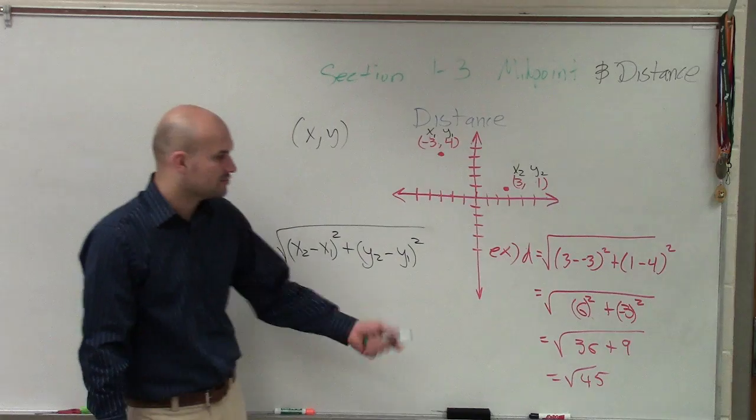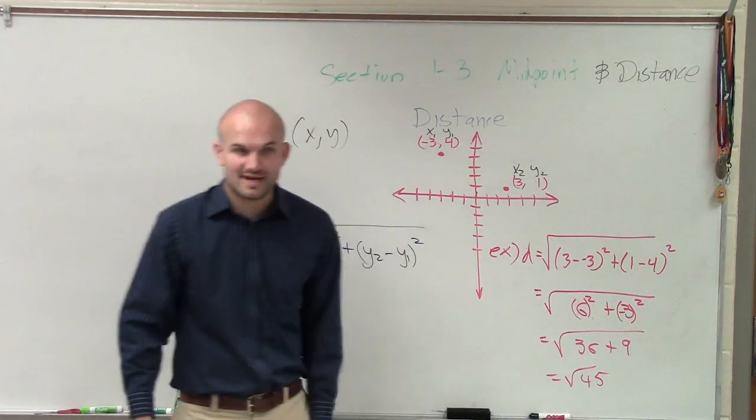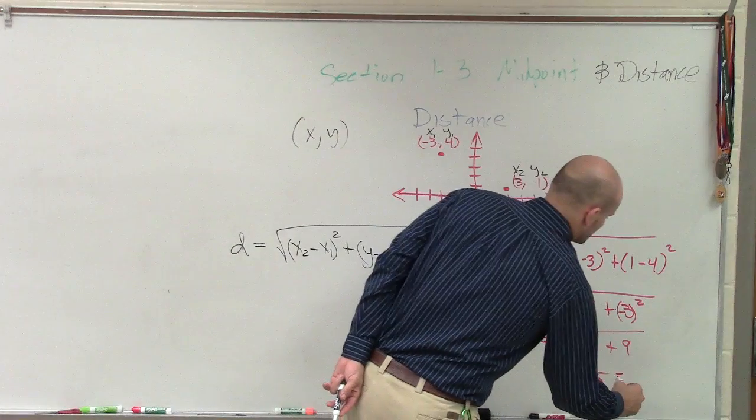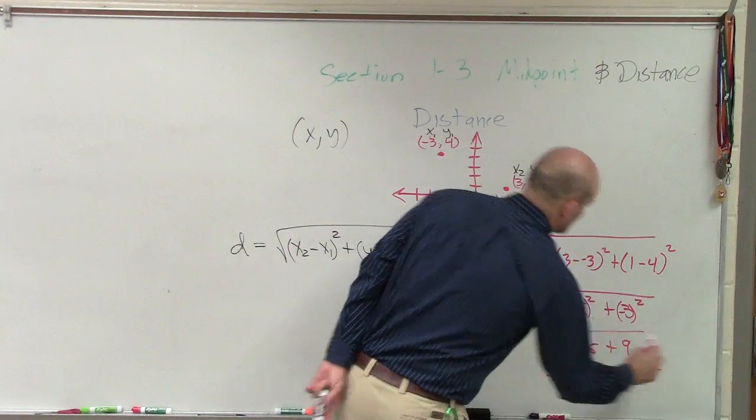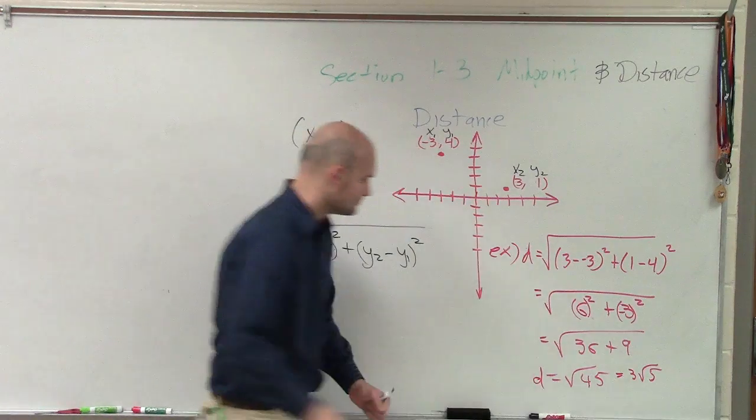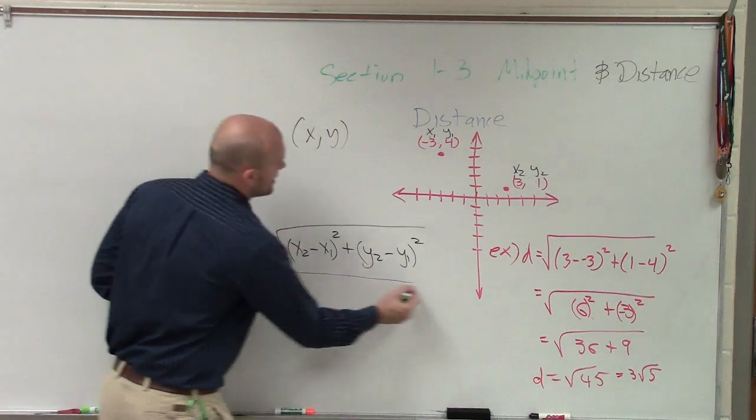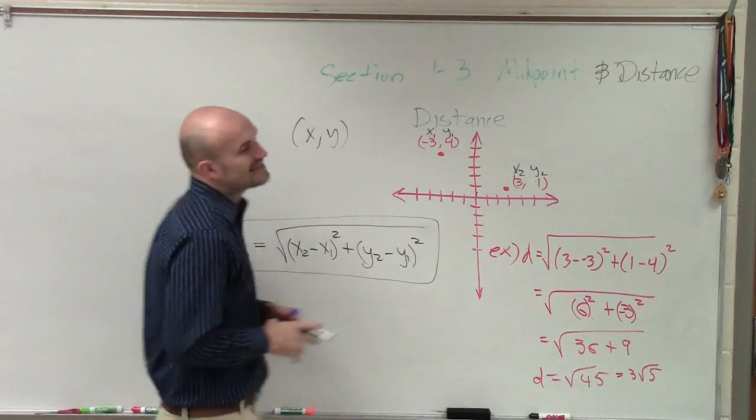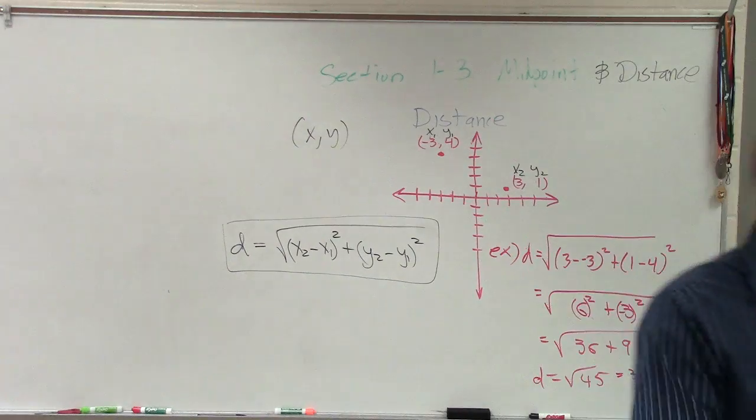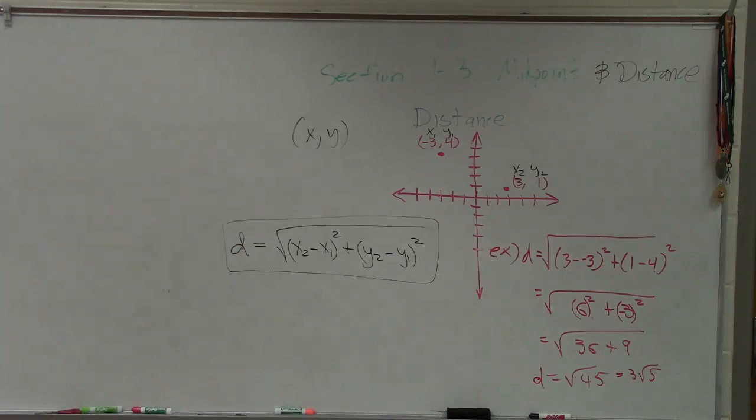So the distance between there is going to be the square root of 45. And if you guys want to simplify that a little bit further, that'd be 3 times the square root of 5. But we'll get to that one later. Alright, so that's how you find the distance. Ladies and gentlemen, the main important thing is making sure you have this formula set up. We will go back to that formula again, but for right now, I just want you guys to have that written down.